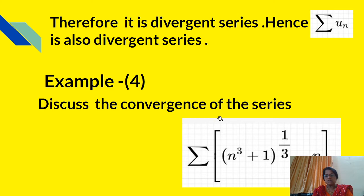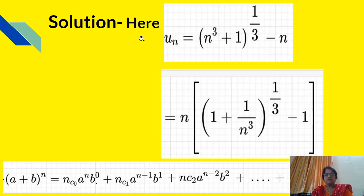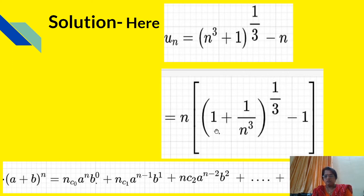Example 4: Discuss the convergence of the series Σ ((n³+1)^(1/3) − n). Here un = (n³+1)^(1/3) − n. Taking n common, this can be written as n·[(1 + 1/n³)^(1/3) − 1]. We will expand this part using the binomial theorem for (a + b)^n.